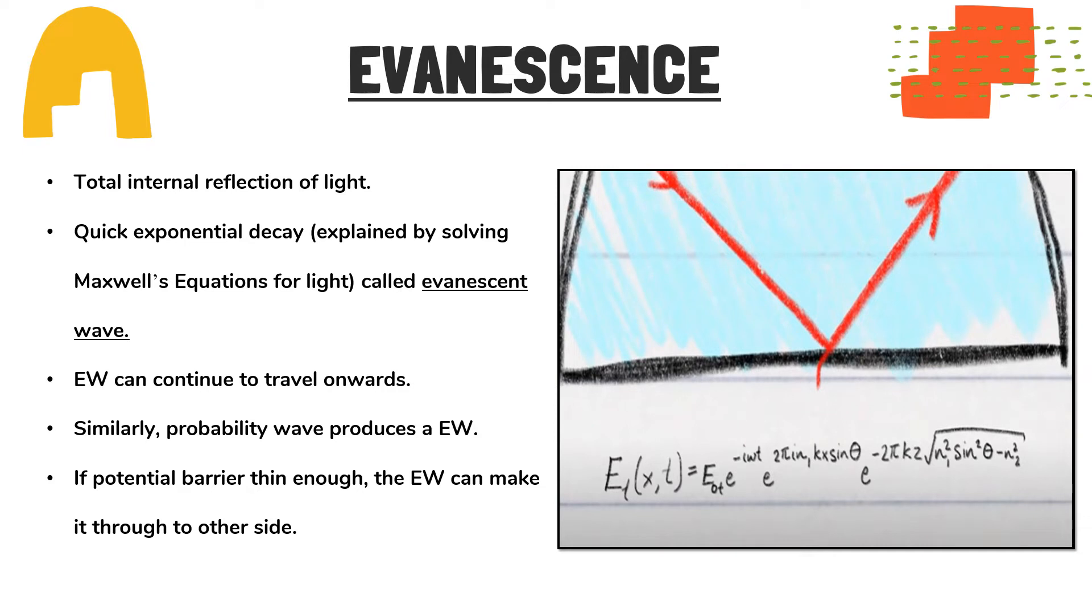And it is seen that at the boundary, instead of a complete abrupt bouncing back of light, there is a very quick exponential drop-off wave called an evanescent wave. This wave lasts for a very few seconds before vanishing.